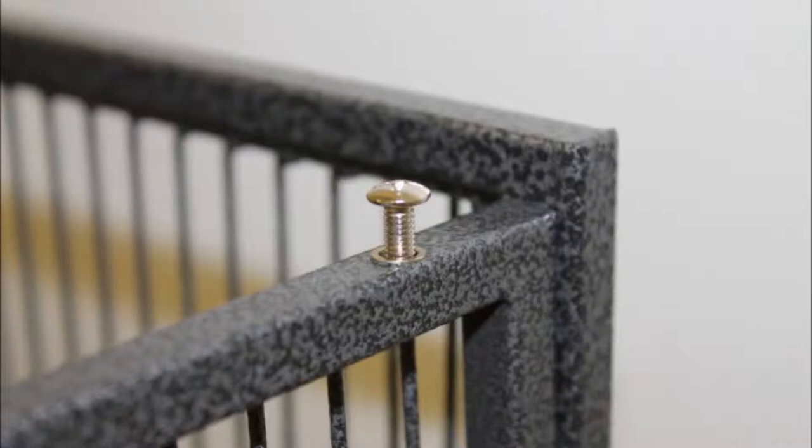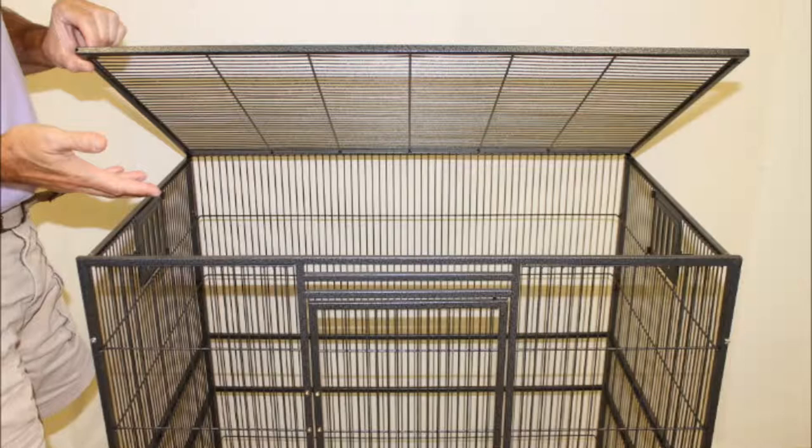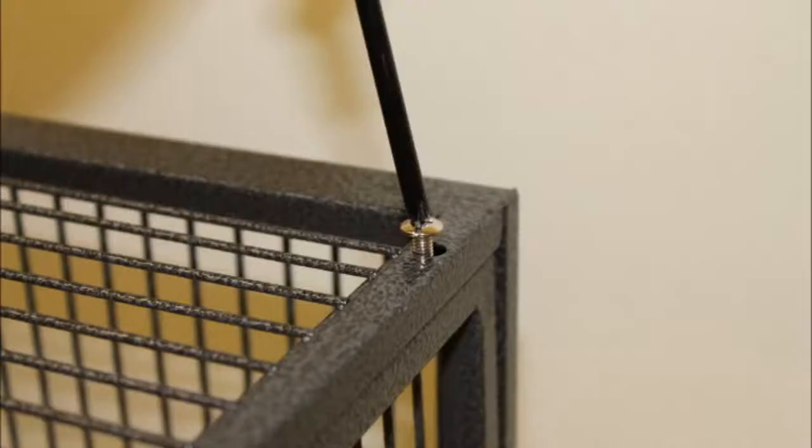Next, you will be attaching the roof panel. Notice the screws are already in place on top of the side panels. These will hold the roof in place. Untwist the screws, then slowly lower the roof panel onto the top of the cage. The roof should fit between the front and back panel, then can be screwed into the side panels.